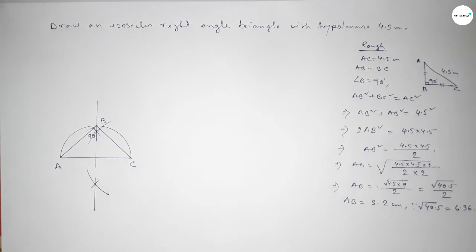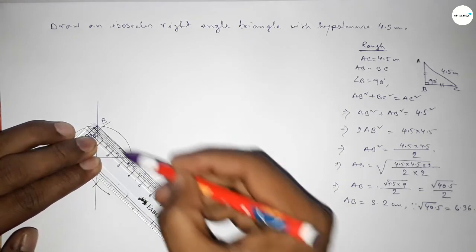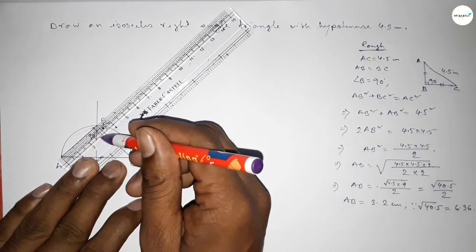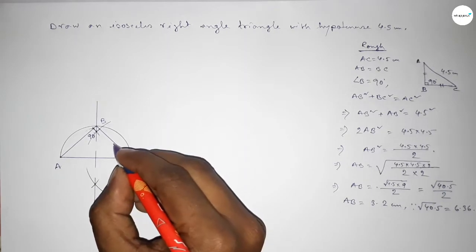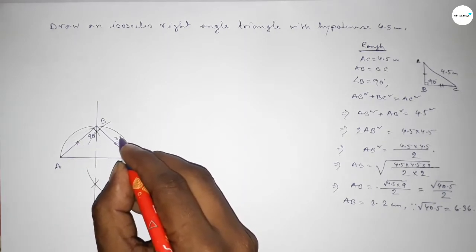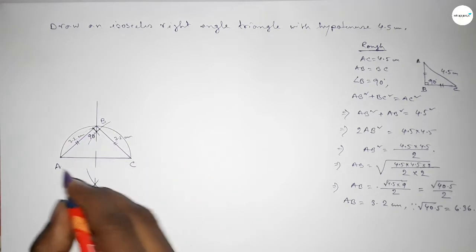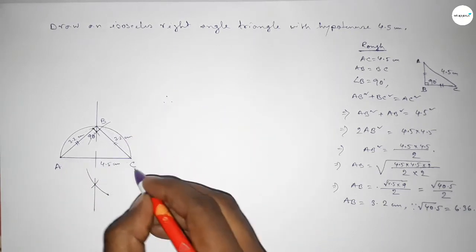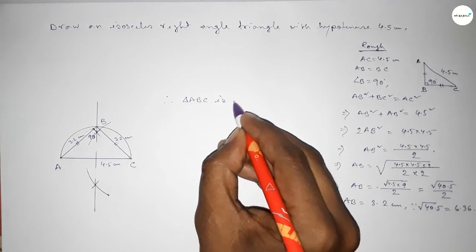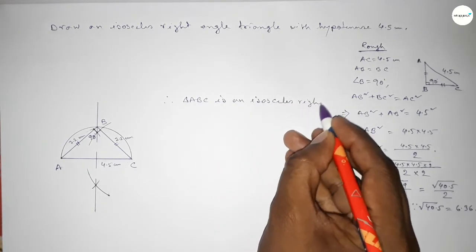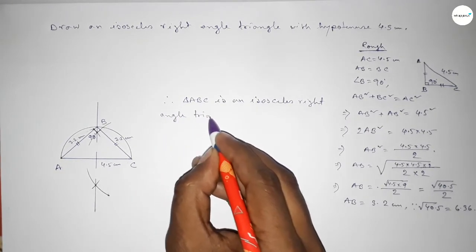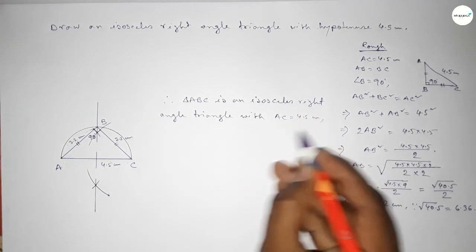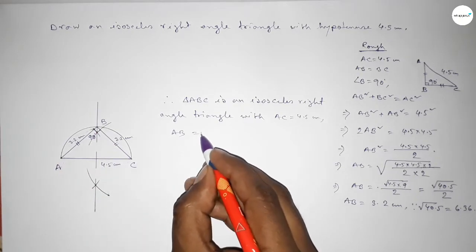Now checking whether all sides are equal: this side measures 3.2 centimeters and this side also measures 3.2 centimeters — so both sides are equal at 3.2 centimeters, and the hypotenuse is 4.5 centimeters. Therefore triangle ABC is an isosceles right angle triangle with hypotenuse AC equal to 4.5 centimeters and two equal sides AB equal to BC equal to 3.2 centimeters.